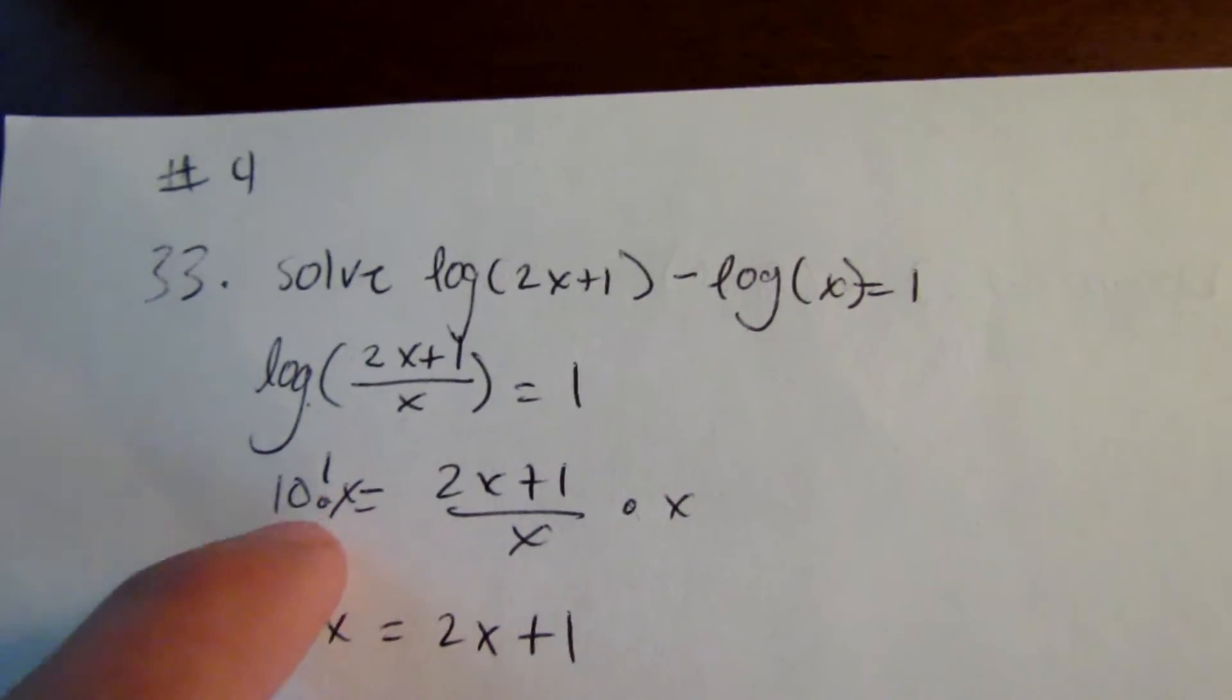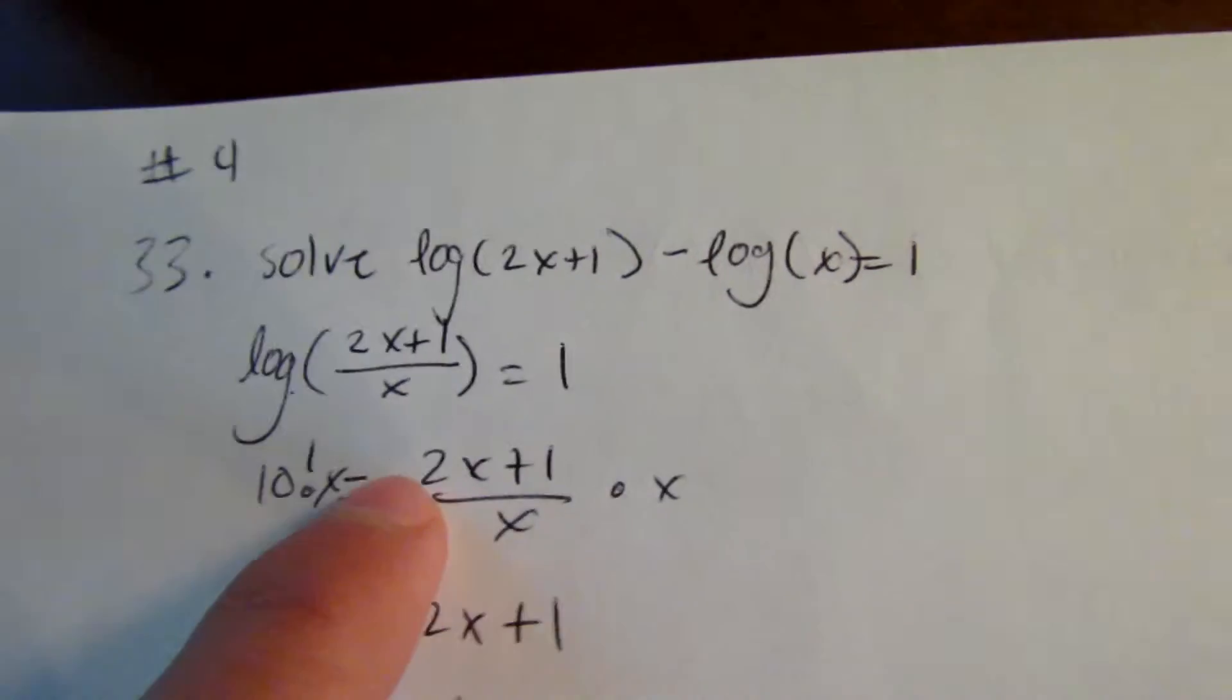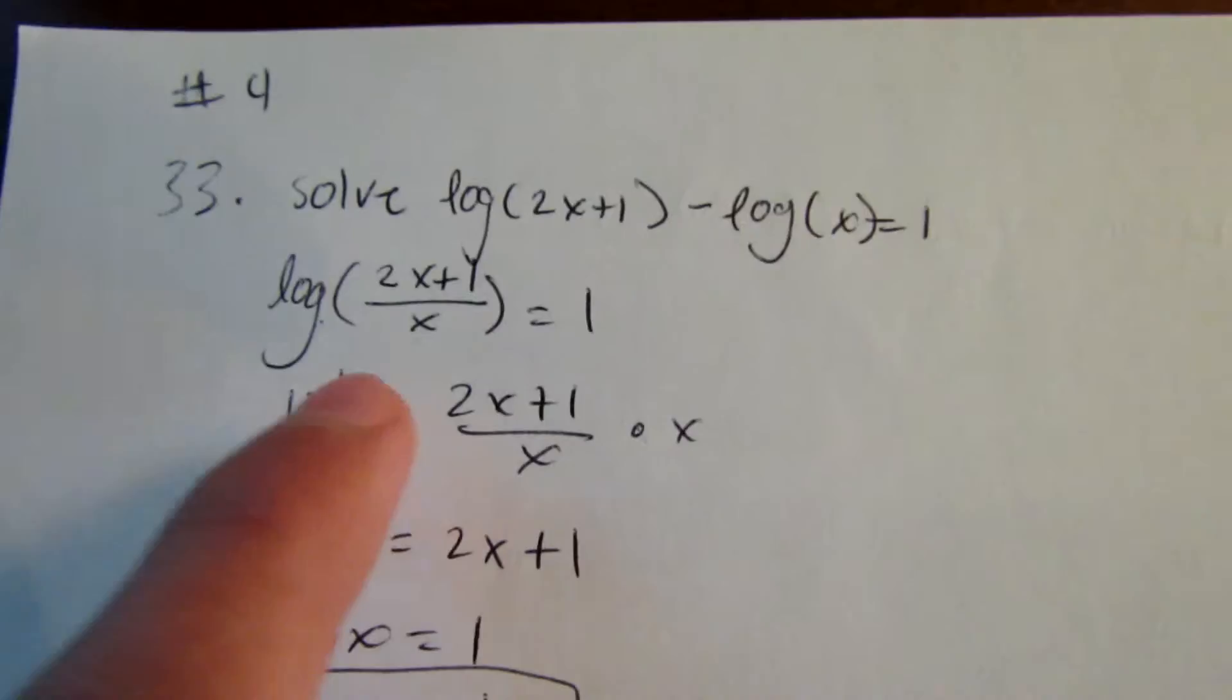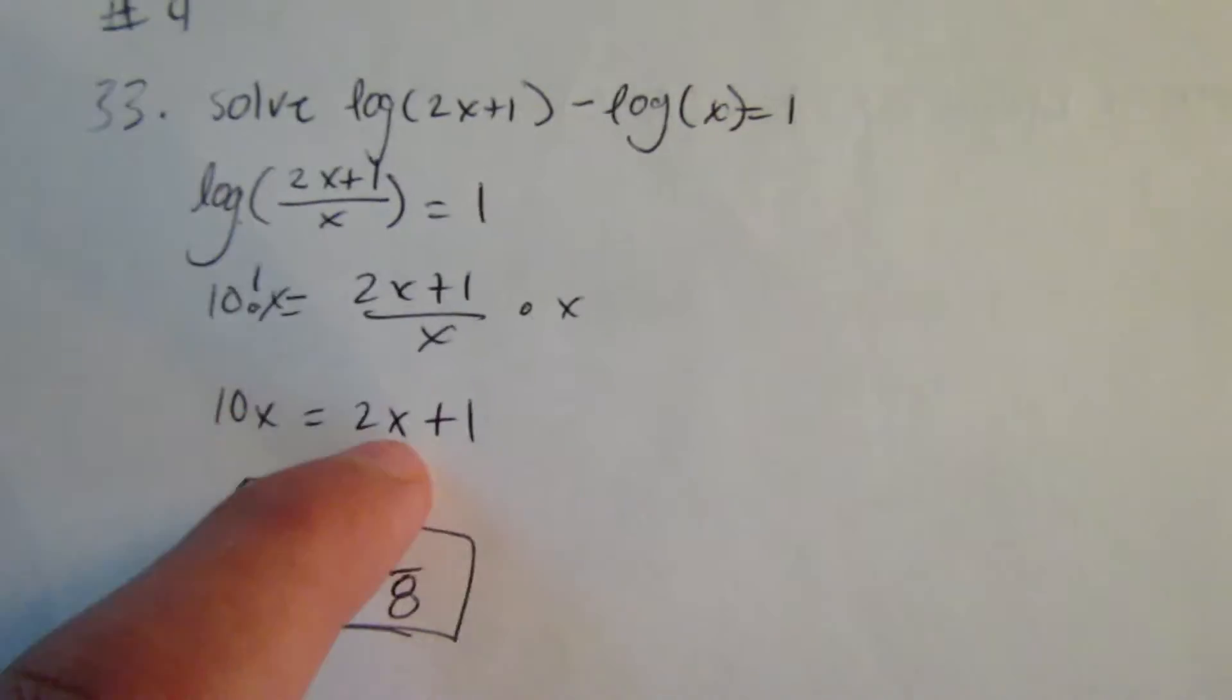So next up, we want to do 10 to the 1 equals 2x plus 1 over x, and then times both sides by x. We should get 10x equals 2x plus 1.